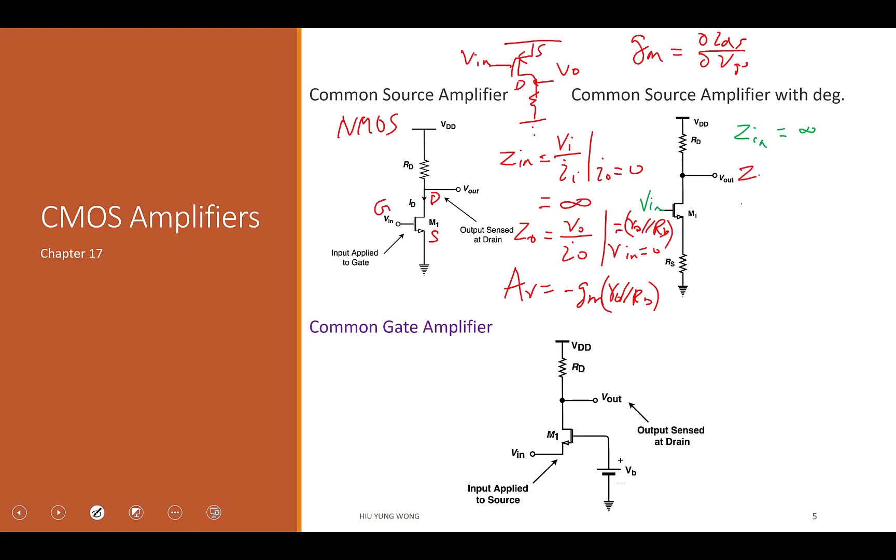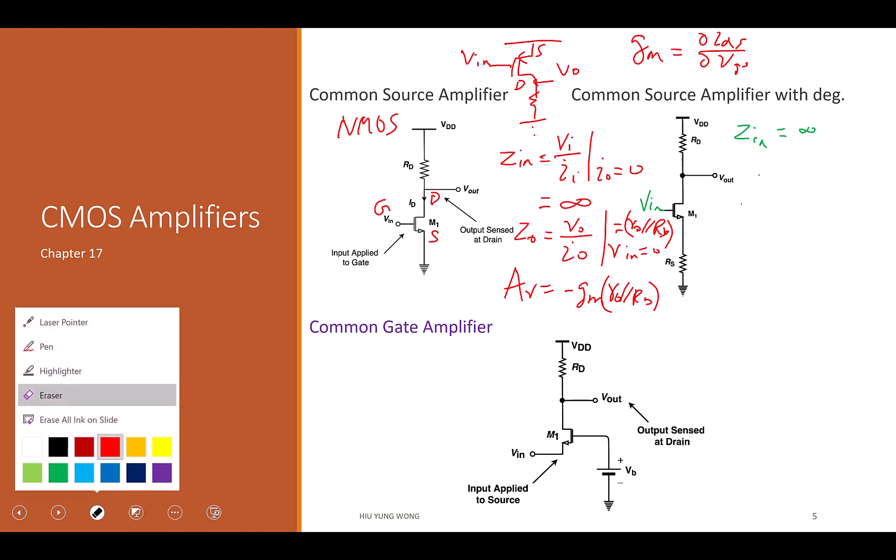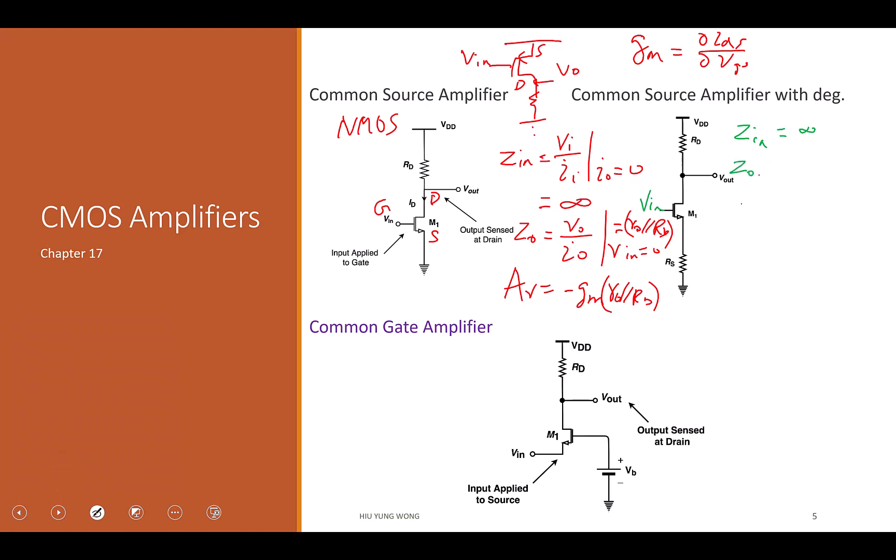What is the output impedance then for the common source with degeneration? Hold on, this is a very good thing to discuss. So someone proposed, maybe they don't think carefully, and then proposed R0 plus Rs parallel RD. And now you say no. Why? Why is it not the case?